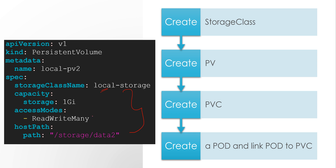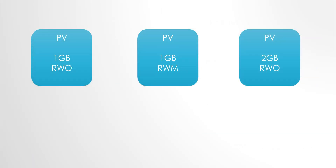The other field we need to be aware of is the access modes. There are three types: ReadWriteMany, ReadWriteOnce, and ReadOnlyMany. For this demo I will create three PVs: one with 1 GB of storage space and ReadWriteOnce, the second one is 1 GB with ReadWriteMany, and the third one is 2 GB with ReadWriteOnce.